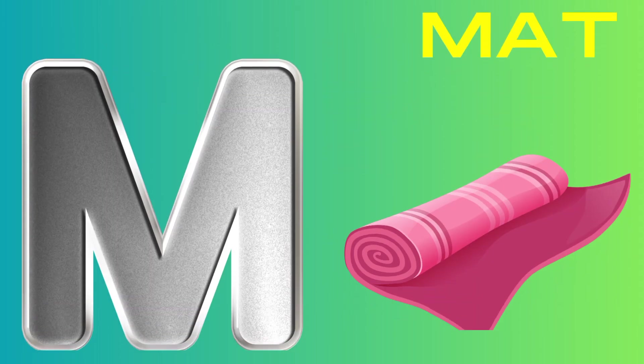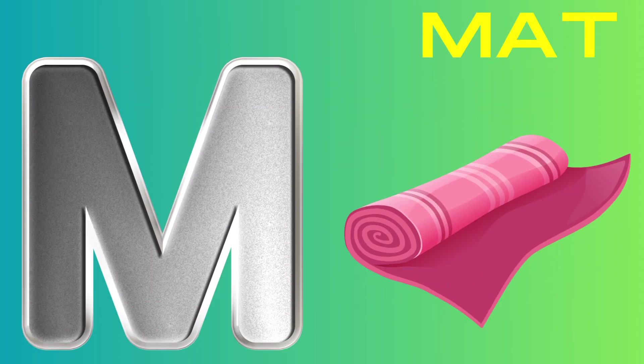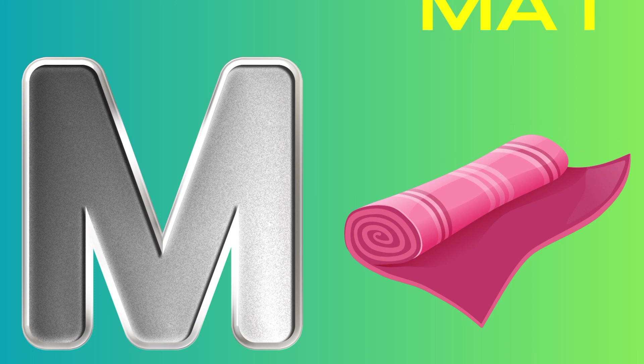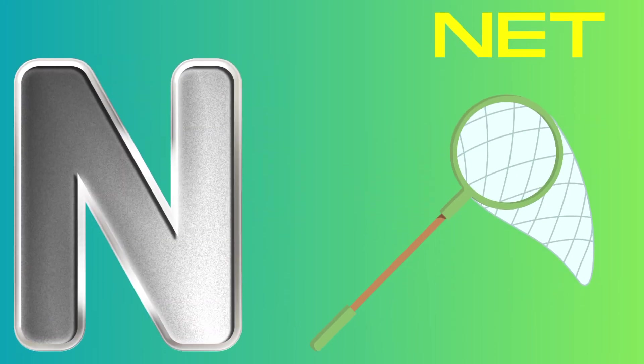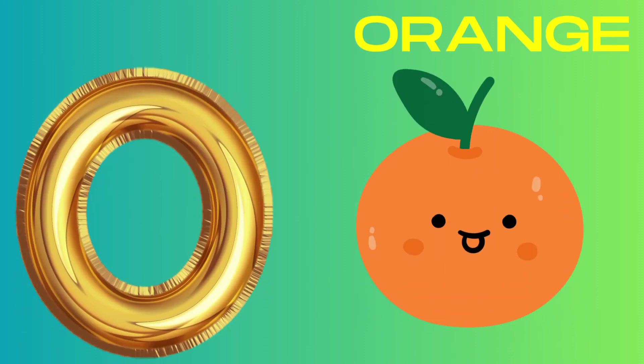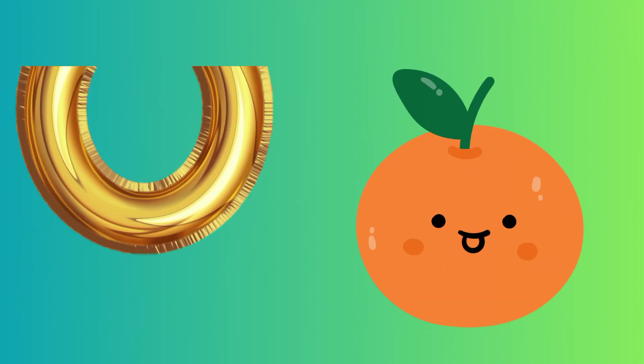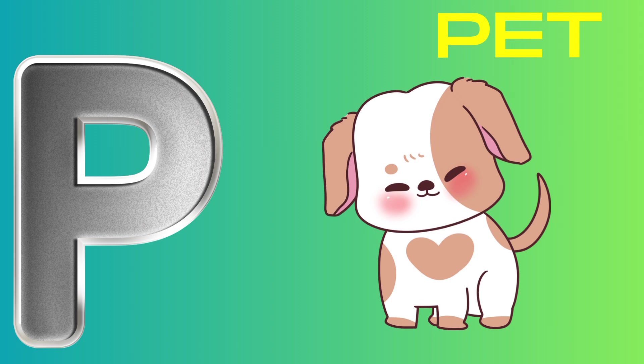M is for mat, m-m-mat. N is for net, n-n-net. O is for orange, o-o-orange. P is for pet, p-p-pet.